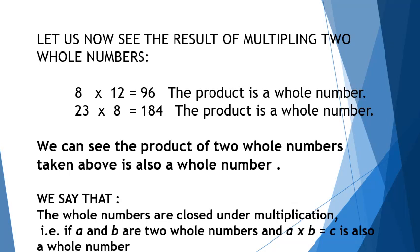Let's see what will happen when we multiply two whole numbers. The first example is 8 multiplied by 12; the answer is 96. Now, 96 is the product of two whole numbers and 96 itself is a whole number. Similarly, 23 multiplied by 8 gives 184, so the product of two whole numbers is also a whole number.